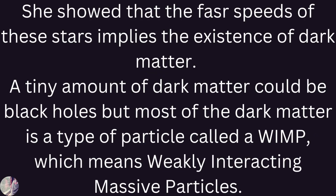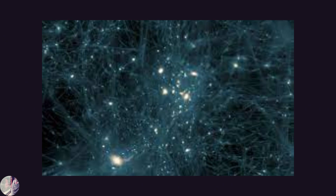She showed that the faster speeds of the stars implies the existence of dark matter. A tiny amount of dark matter could be black holes, but most of the dark matter is a type of particle like a WIMP, which means weakly interacting massive particles, as the WIMPs are shown in this diagram.